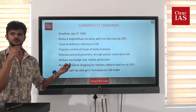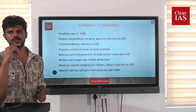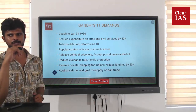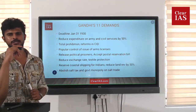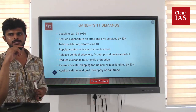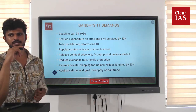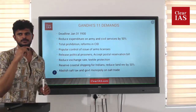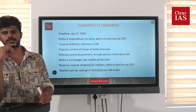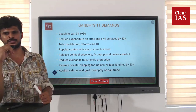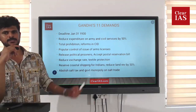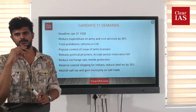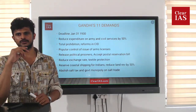The demands were not only confined to political matters. He requested the British to reduce the exchange rate between the British pound and the Indian rupee, which was at that time fixed by the British government and not by the free market. He also requested textile protection — reducing taxes on the textile industry and increasing import duties — and demanded that coastal shipping be reserved only for Indians. For the peasants, he demanded that land revenue be reduced by 50%.